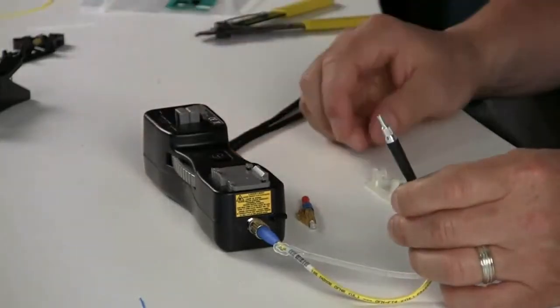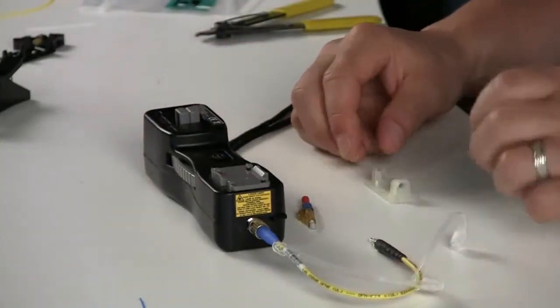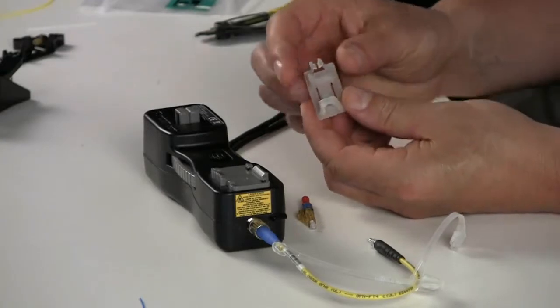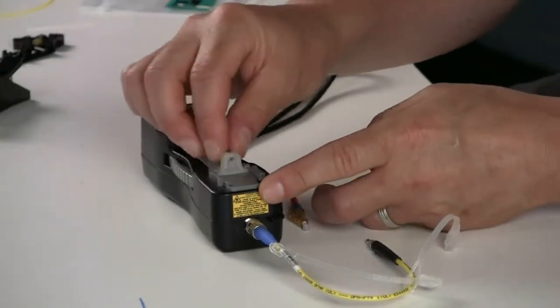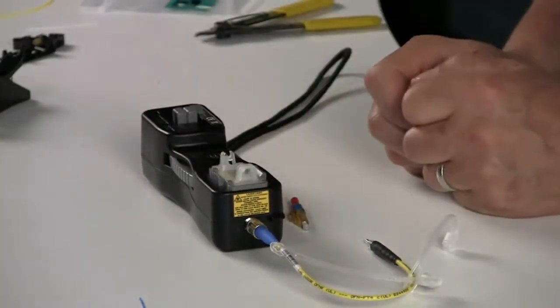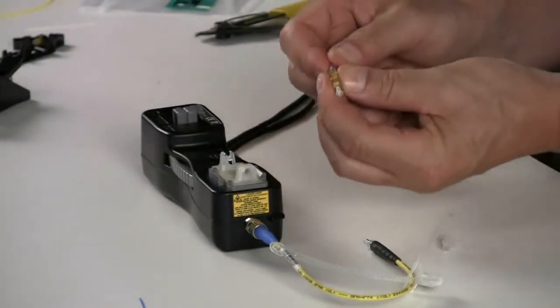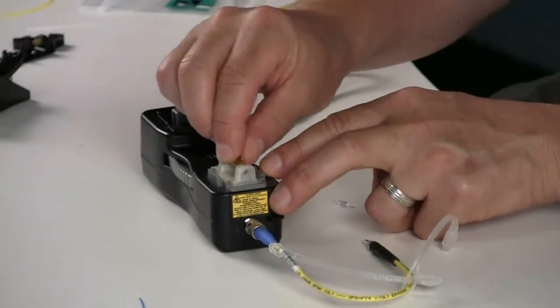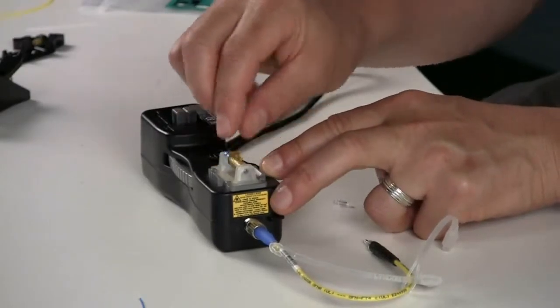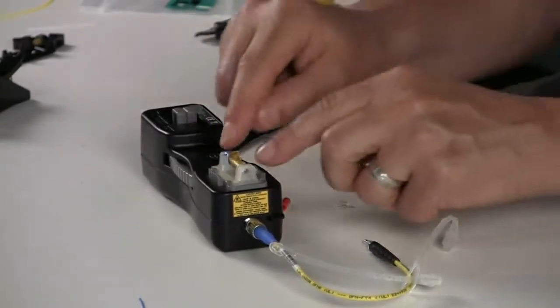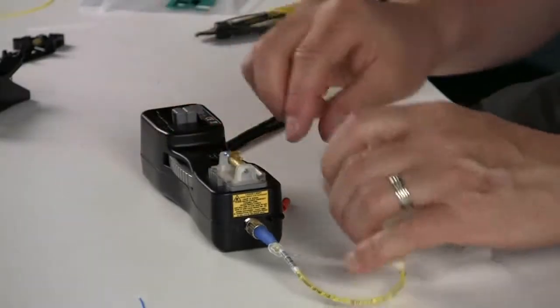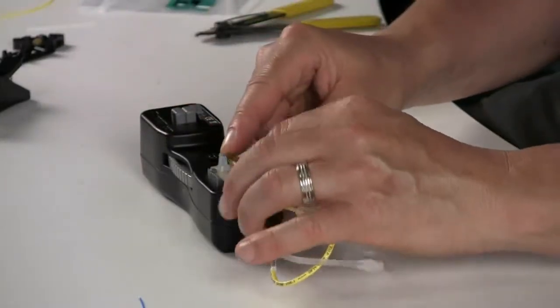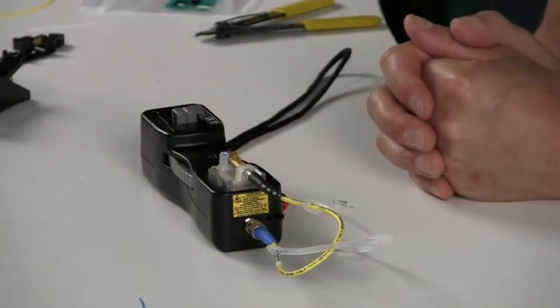The LC portion then goes into the connector portion. The LC sled slides into the cradle. The LC connector then slides into the cradle and pops into place. And then you attach the LC patch cord to the connector.